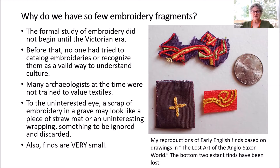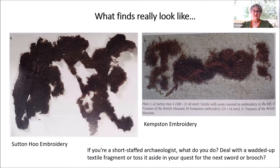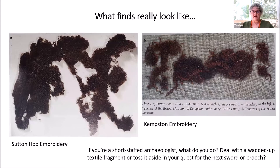Also, the finds are very small. I did some reproductions of finds that are lost, using drawings and text descriptions, and you can see they're not much bigger than the size of a quarter. This is what the fragments really look like — unrolled, probably cleaned, and laid out so you can understand they are textile. But when you see things like this, you understand why archaeologists probably wouldn't recognize them.